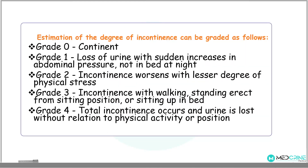Urinary incontinence can be graded into five grades: grade zero to grade four. In grade zero, the patient is continent — no urinary incontinence. Grade one: loss of urine with increased abdominal pressure, but not at night in bed. Grade two: incontinence worsens with a lesser degree of physical stress. Grade three: incontinence with walking, standing erect from a sitting position, or sitting up in bed. Grade four: total incontinence — urine is lost without relation to any physical activity or position.